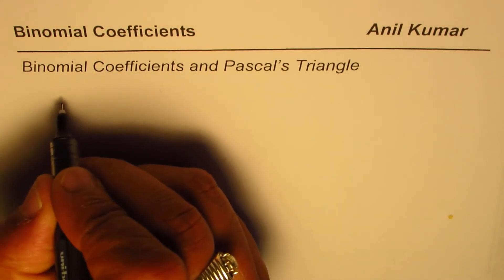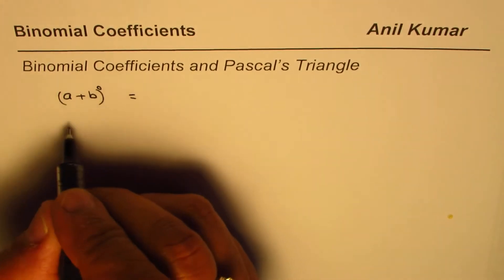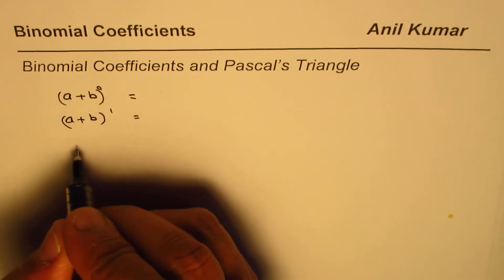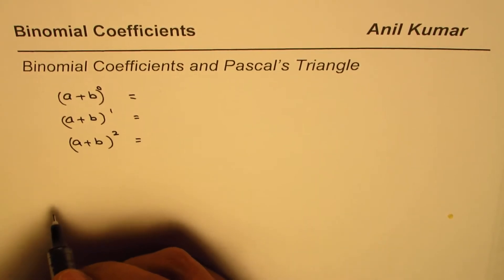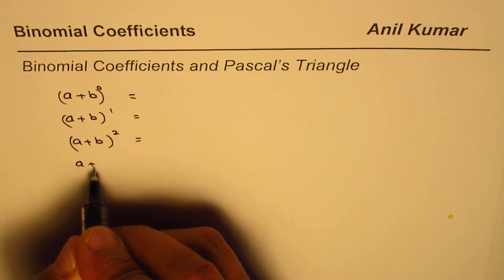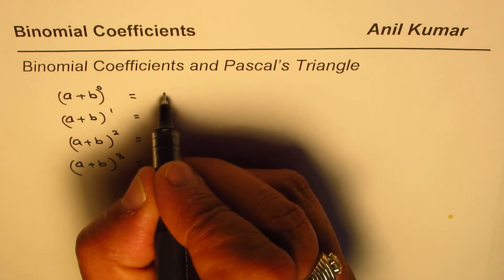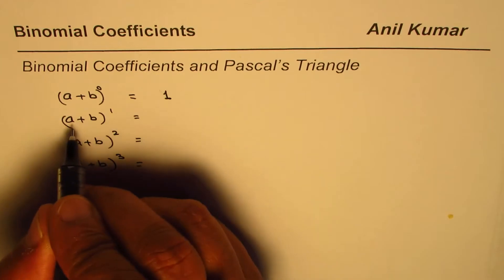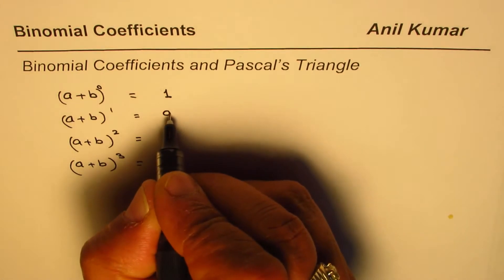If I have (a + b) to the power of 0, what do I get? And if I have (a + b) to the power of 1 and expand it, what do you get? Anything to the power of 0 is 1, and anything to the power of 1 is the number itself, which in our case is the binomial a + b. So we get a + b.